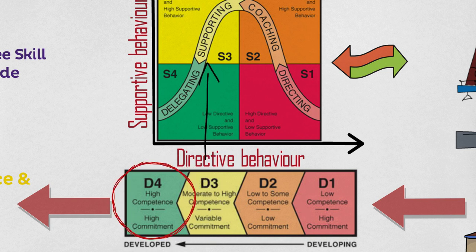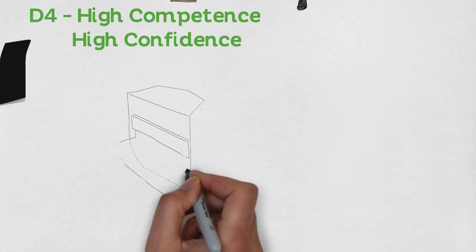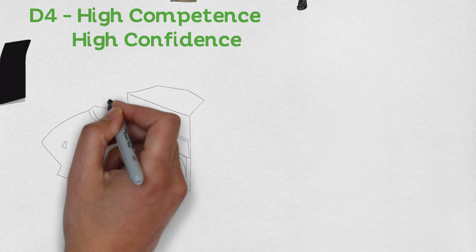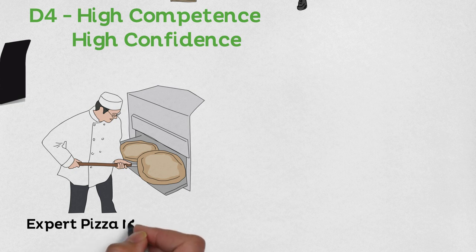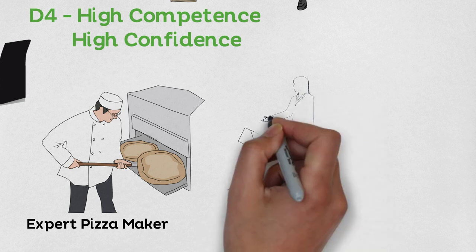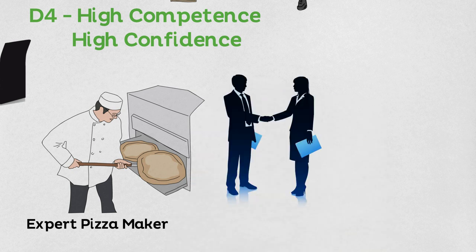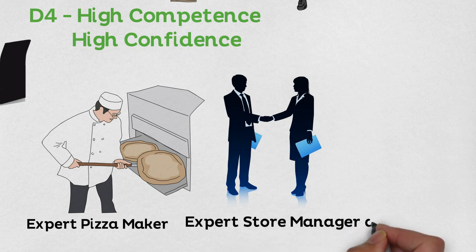D4 is high competence and confidence. This best describes an employee who has been performing a particular job for years — they are highly competent and confident and need little to no direction. In my last year of university, I was promoted to head store manager, having learned to handle schedules, inventory, and customer complaints. The franchise owners delegated all their tasks to me, and in return paid me a good salary and gave me some ownership in the store.